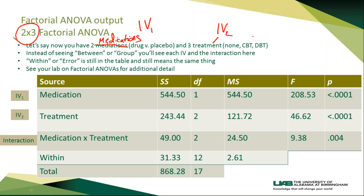In the ANOVA table, or the F table, instead of seeing 'between' or 'group' under the variance source, you actually see the name of the independent variable — the name of the factor — and the interaction right there. Notice that the within, or the error term, is still there, just like it was in the one-way ANOVA. That never really changes. Go back to your lab that covered factorial ANOVAs and be familiar with the output. It can be more complex, but we'll walk through an overall example here.